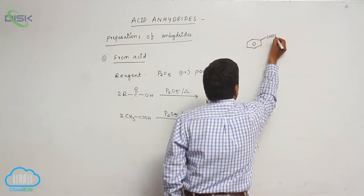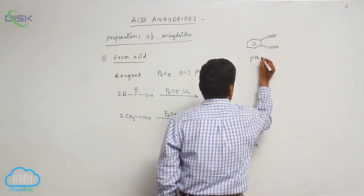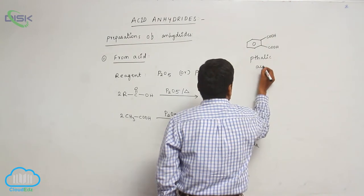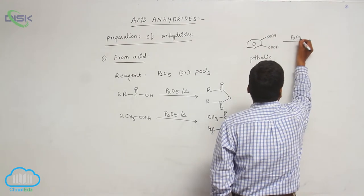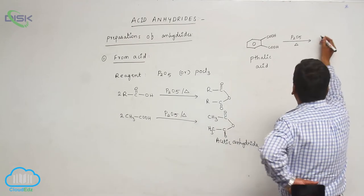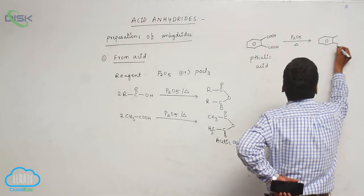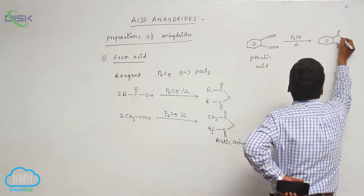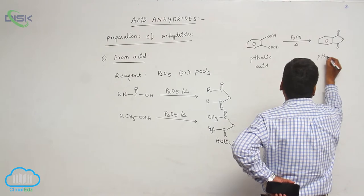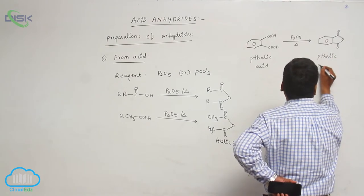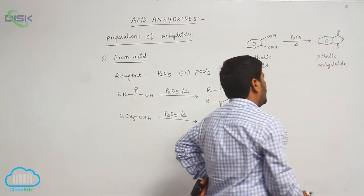Phthalic acid, when heated in the presence of phosphorous pentoxide, loses half a molecule of water to form phthalic anhydride.